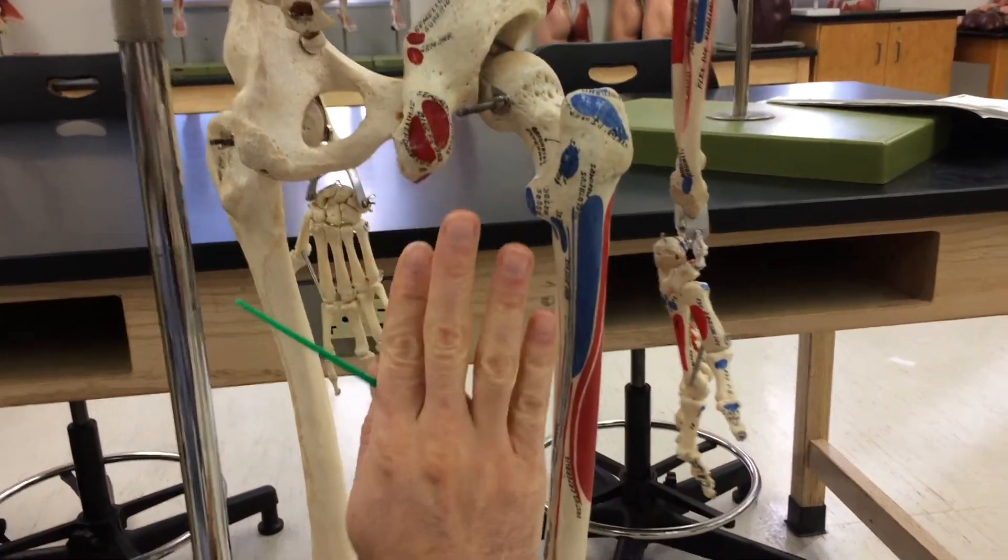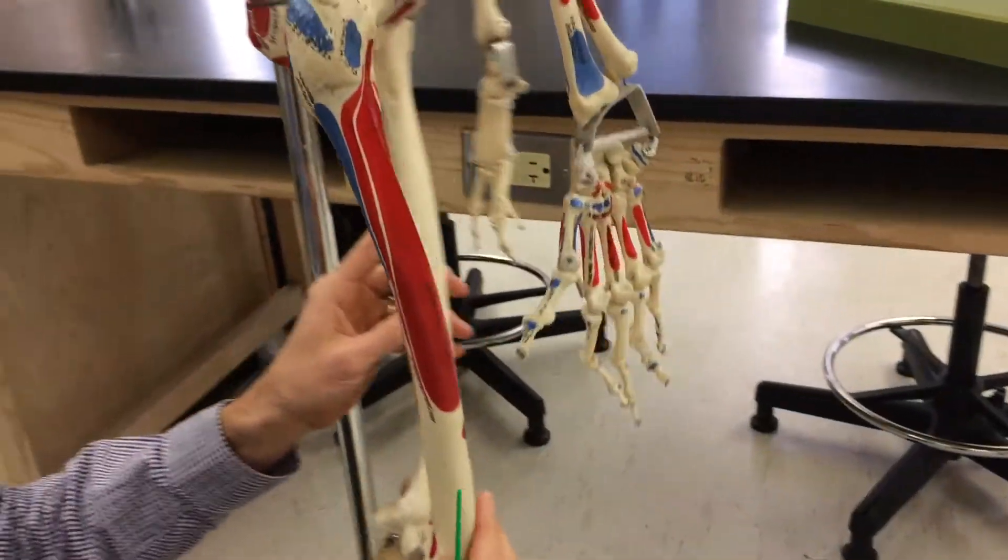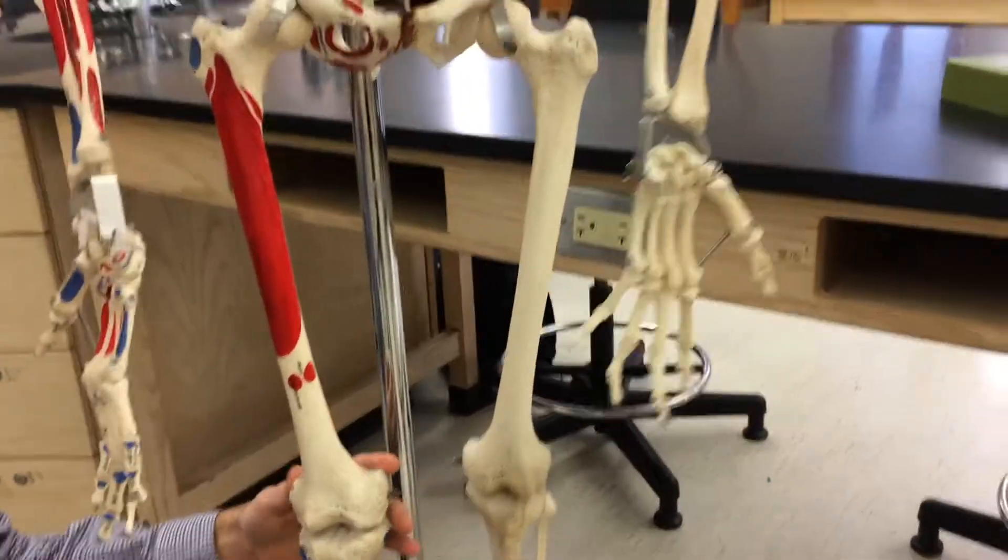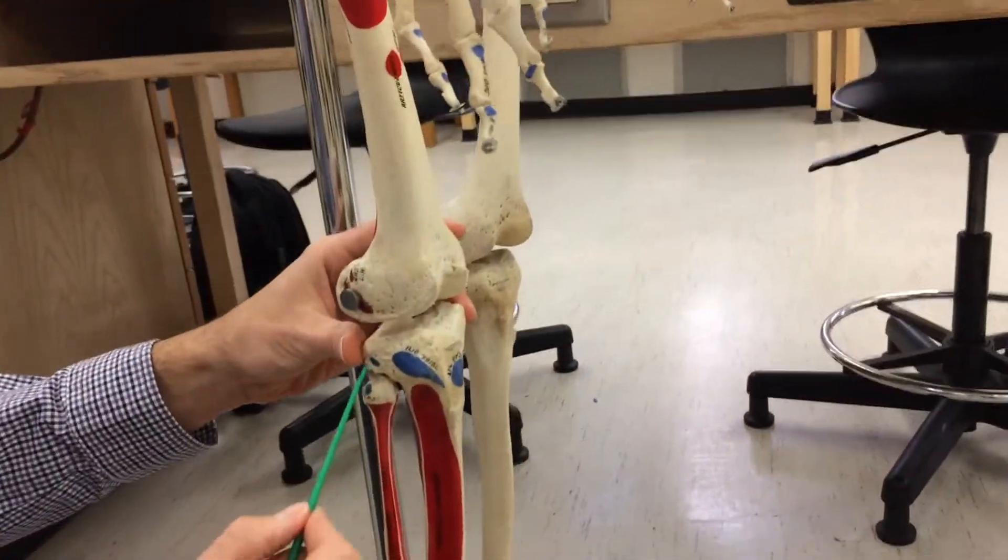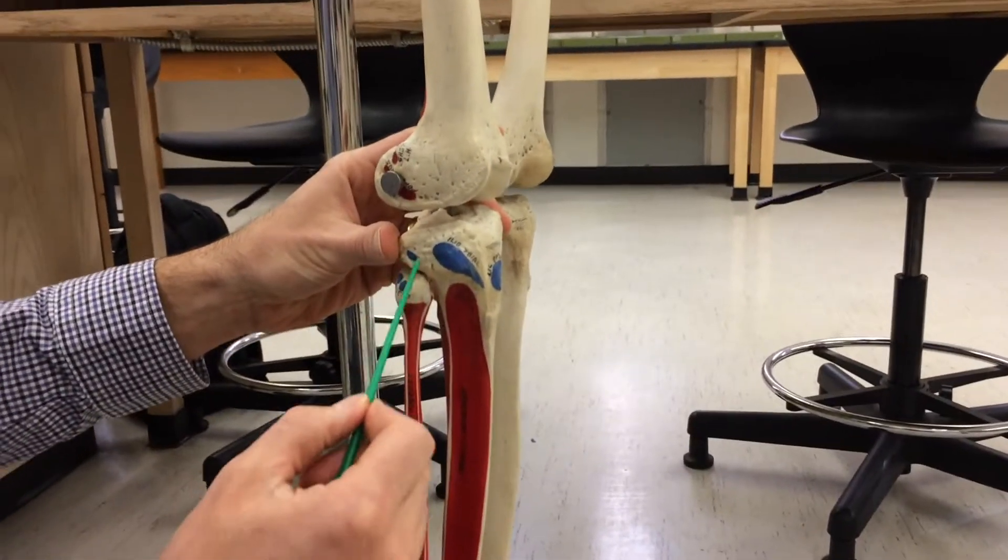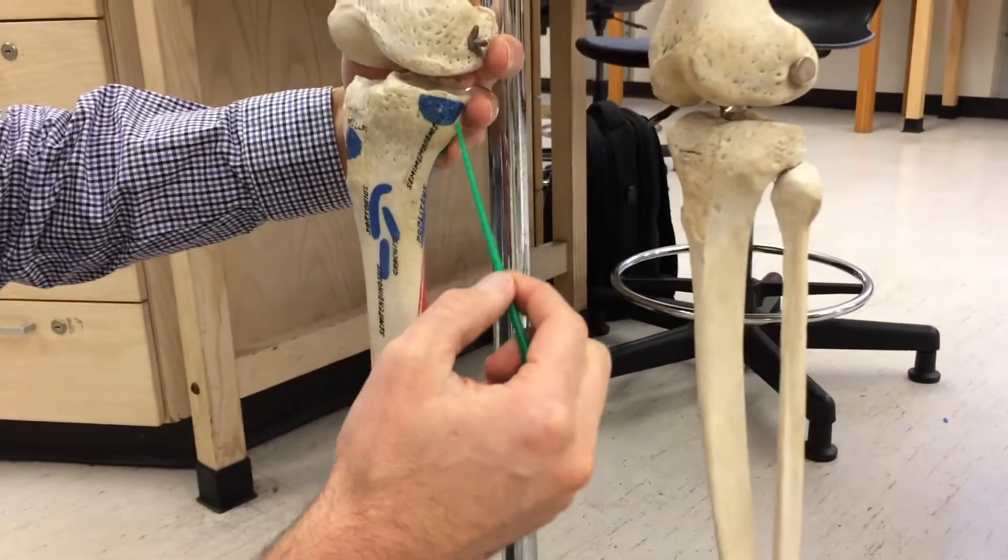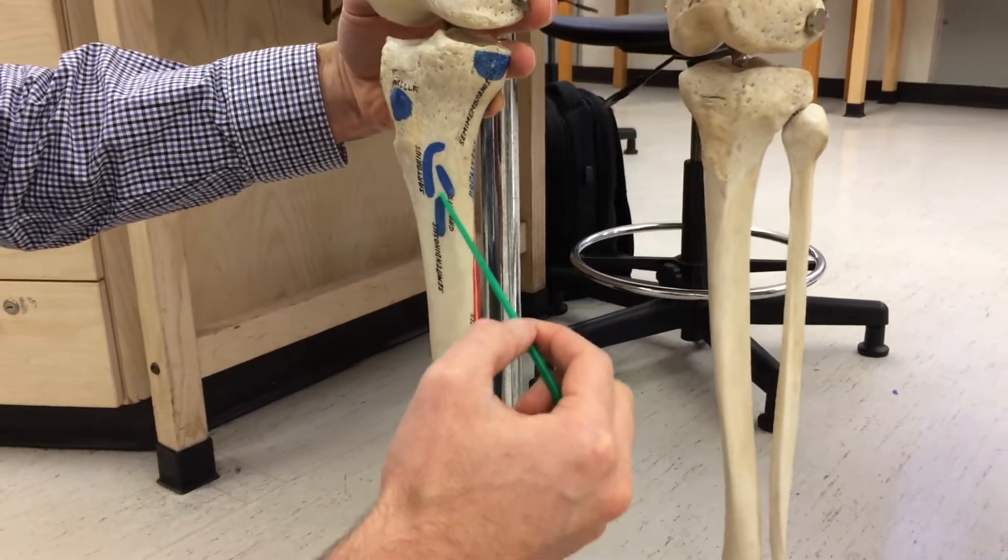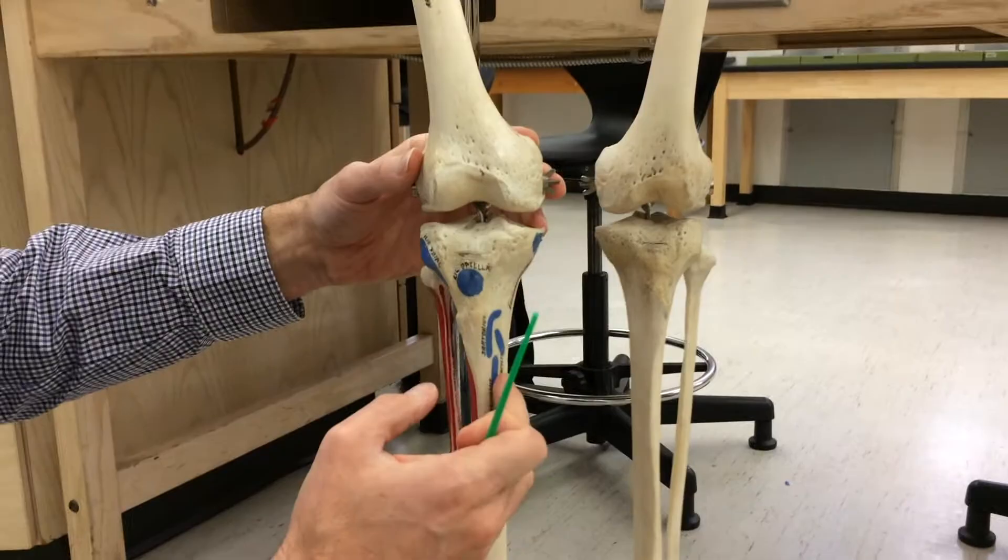Again, these muscles on the posterior side come down like this, and they wrap around to the front side here. So if we look on the anterior side, you'll see here biceps femoris, these blue spots here. You'll see here semimembranosus, and you'll see here semitendinosus. So basically on the medial and lateral sides of the tibia.